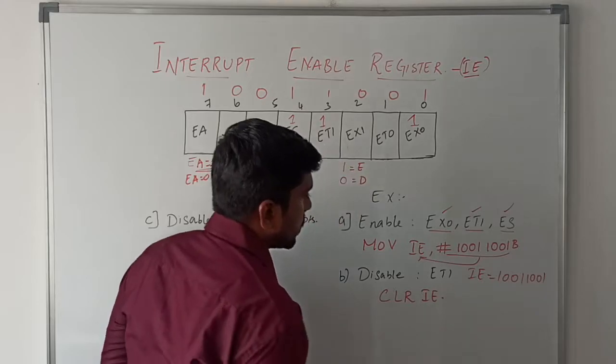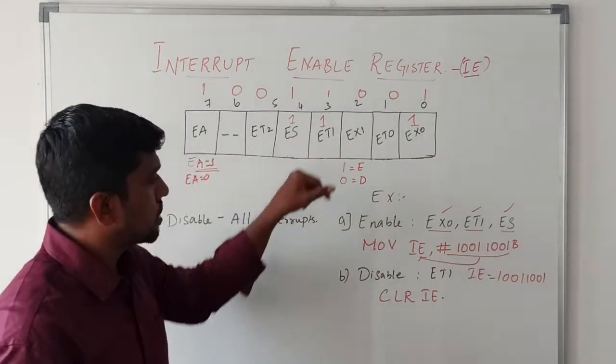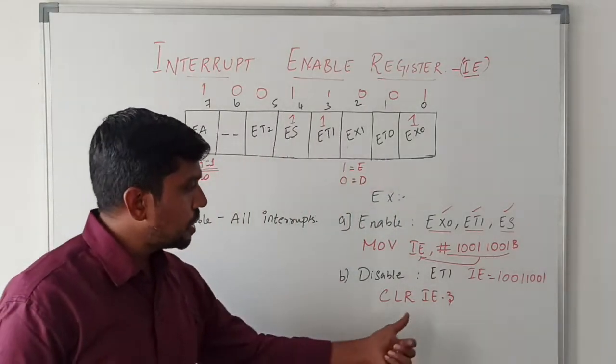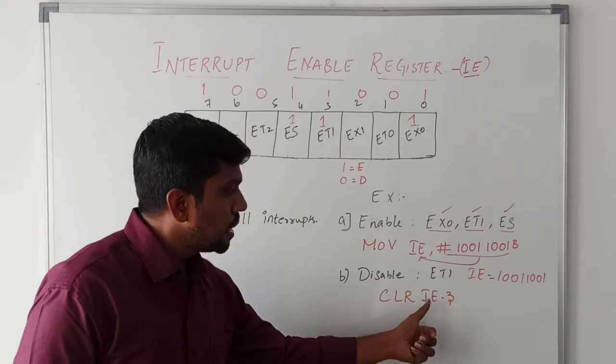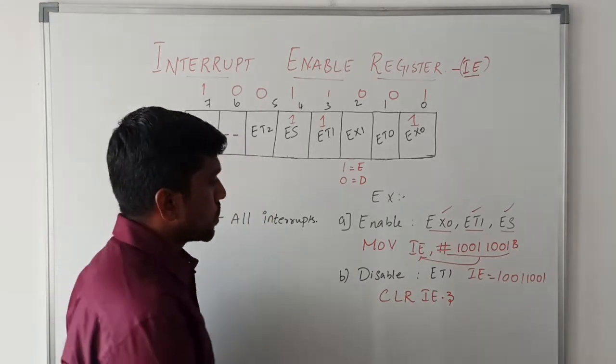ET1 bit is 3, so IE dot 3. IE is the IE register. In this register, only clearing the third bit value.